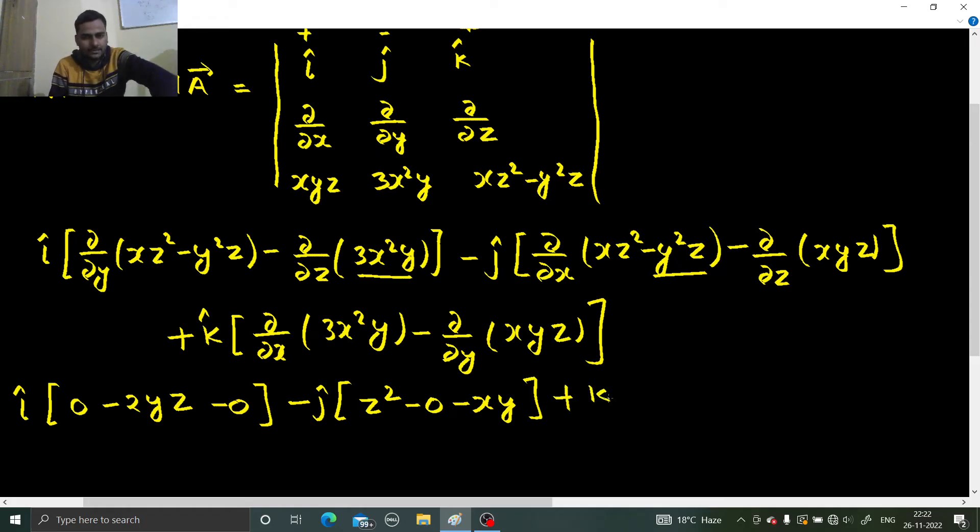Coming to k. Derivative with respect to x: x² derivative is 2x, times 3y, that's 6xy. Derivative with respect to y gives xz.